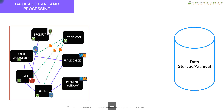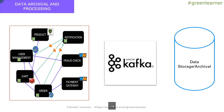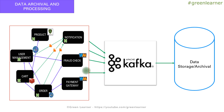Coming to the next part: data archival and processing. Sometimes we need real-time data streaming to other parts of the system that can be used for artificial intelligence, machine learning, and data processing. For that transfer of data I am going to use Kafka. A Kafka server running a separate Kafka service is going to take the data from the individual services and transfer it to other systems as per need.